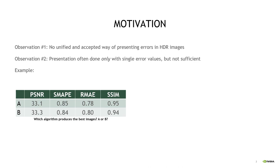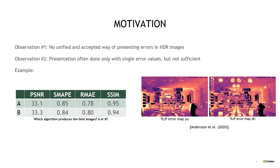What we have observed is that rendering researchers and practitioners have no unified and accepted way of presenting errors in their HDR images. For example, a common way of presenting errors is by using tables of single error values, but these are often not sufficient to present the errors found in images. Instead, more emphasis should be put on the error map, which shows where and how large the errors are, providing a more complete picture about the algorithm's strengths and weaknesses. This was done in the recent FLIP work; however, the FLIP work focused only on low dynamic range or LDR images.